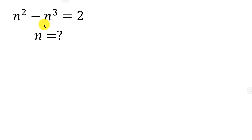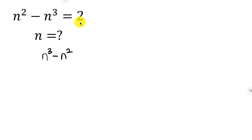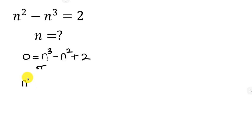First, let's move all parts of this equation to one side so that it equals zero. Moving the terms to the right hand side gives us n cubed minus n squared plus 2, equal to 0.